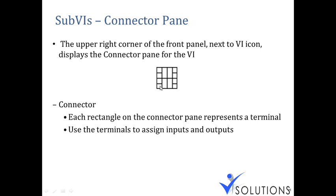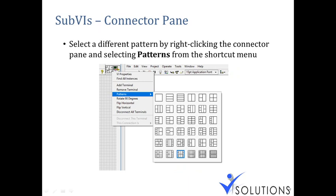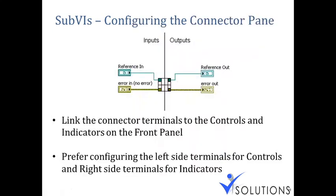To configure a terminal, click on a terminal in the connector pane — you'll see the wiring tool appear. Click that terminal, then click on the corresponding control or indicator on the front panel to link them. This is how you configure your connector pane. You choose how many inputs and outputs you need, then link each terminal to the corresponding front panel object.